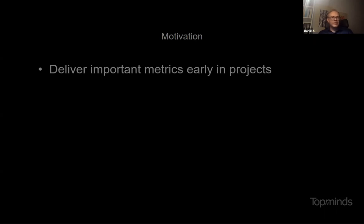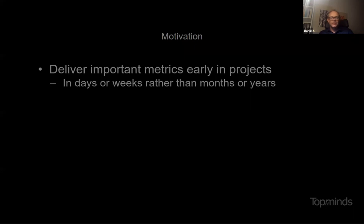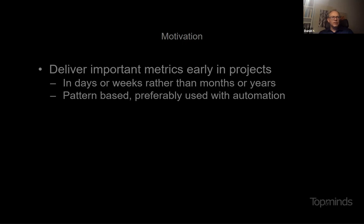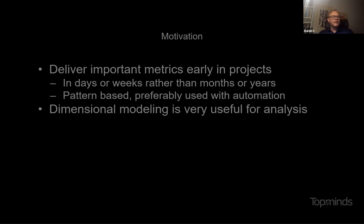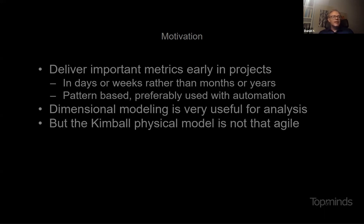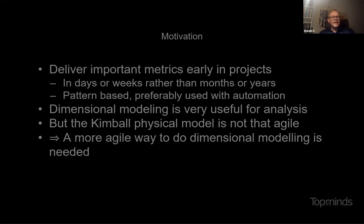When we are building a data warehouse, it's very important to be able to deliver important metrics early in the project — in days or weeks rather than months or years, which is far too common in big data warehouse projects. To be able to do this, we need something that is pattern-based so we don't have to reinvent the wheel all the time, and we would preferably like to use it with automation so we can generate part of the code. We are basing this on dimensional modeling because it's still probably the best way to do analysis. But the physical part of Kimball modeling is not that agile, so we need a more agile way to do dimensional modeling.